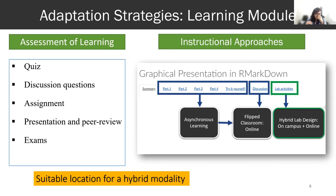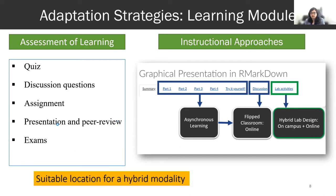If there is any gap in communication, students can still proceed with the learning module, do group activities, or solve problems. I'll show you how I communicated with students so no one gets lost or confused. The assessment criteria I have are: quizzes, discussion questions with group activity options, assignments solved during lab time in groups, presentation peer reviews, and two exams — a midterm and a final.